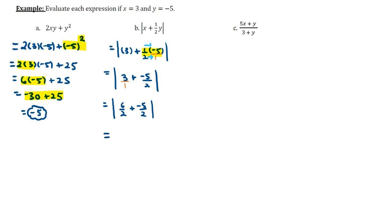And now that we have the common denominator, we'll go ahead and combine the tops of these fractions via addition. So 6 plus negative 5 all over 1 copy of the common denominator of 2. 6 plus negative 5 is 1. So we're looking at the absolute value of 1 half, which is 1 half. And so our final answer for example part B is 1 half.